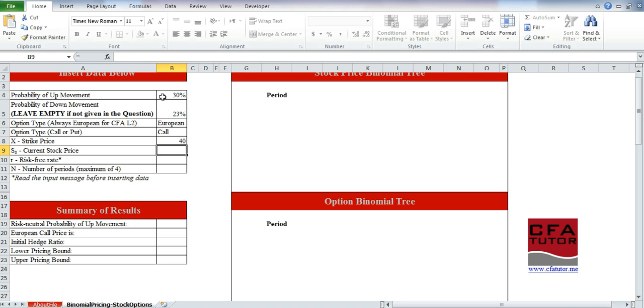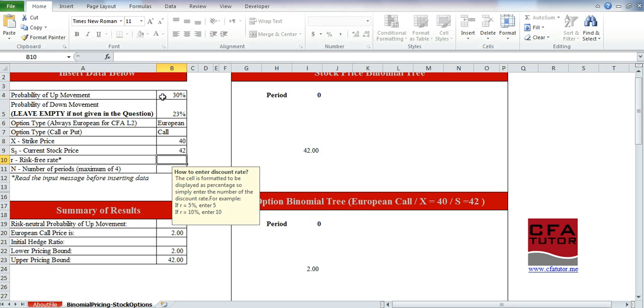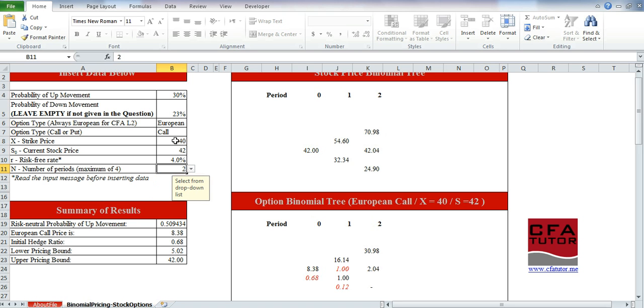And current stock price is $42, the risk-free rate is 4%, and we choose between up to four periods, and we have the number of periods to be 2.